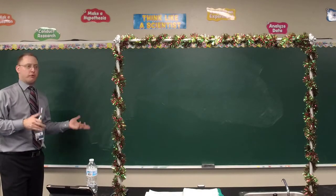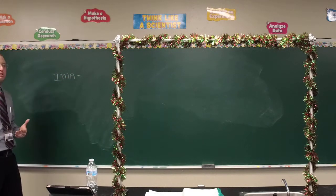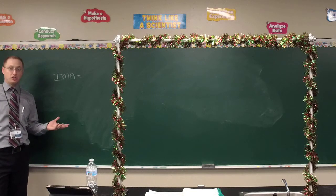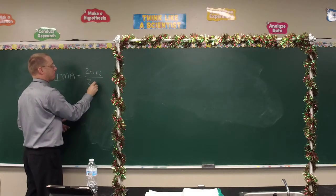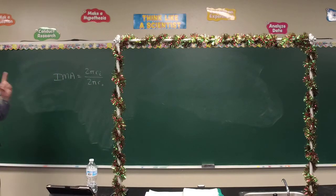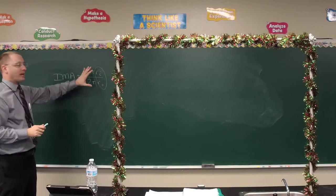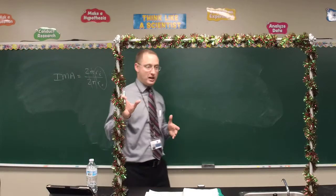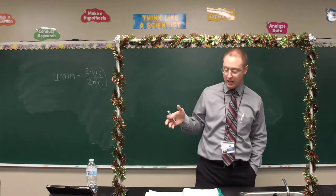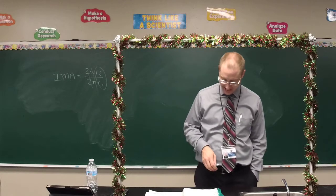As far as IMA for the wheel and axle: you're turning wheels, so what shape is being made? A circle. The input distance is simply the input circumference, and the output distance is the output circumference. But we can cancel the 2π's, so practically speaking, IMA equals R sub i over R sub o — the radius of the wheel you are turning over the radius of the wheel that is being turned.